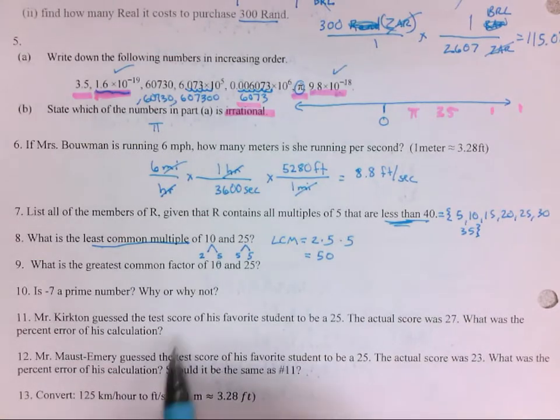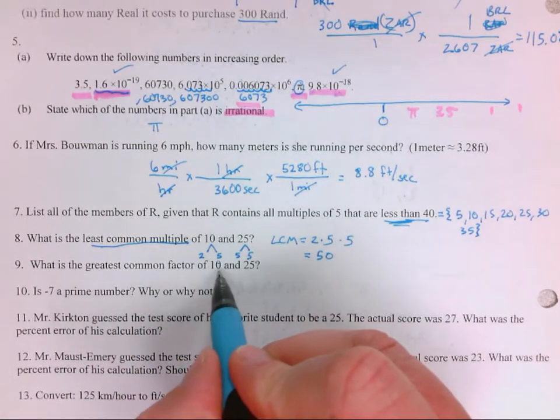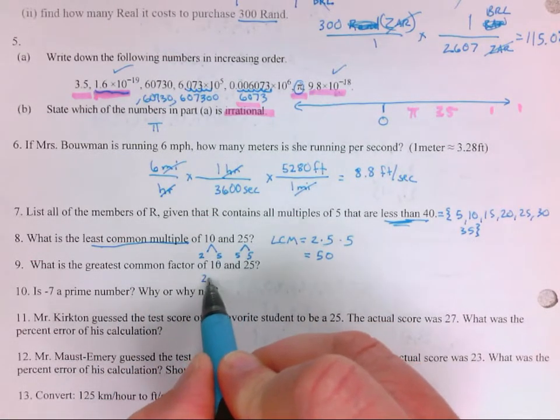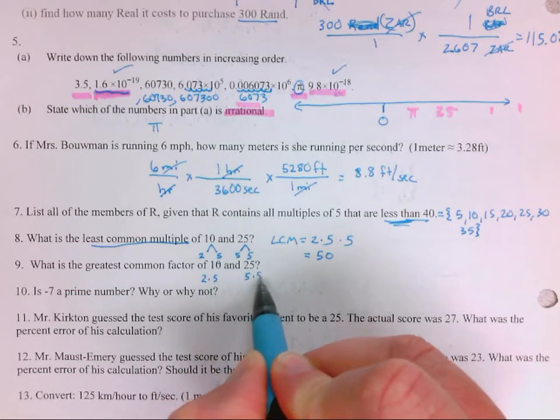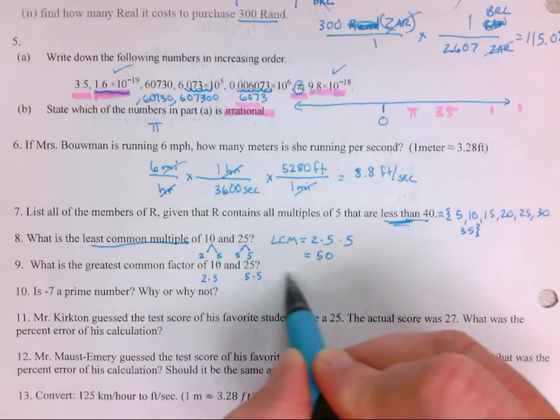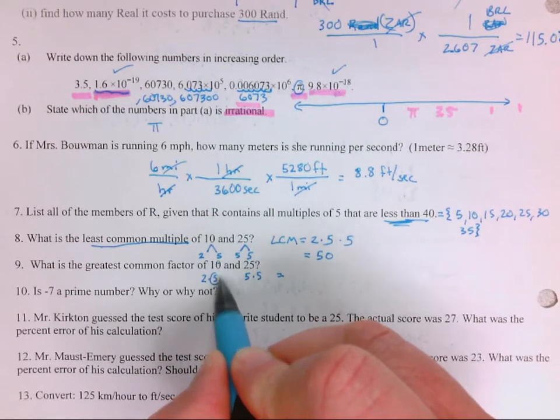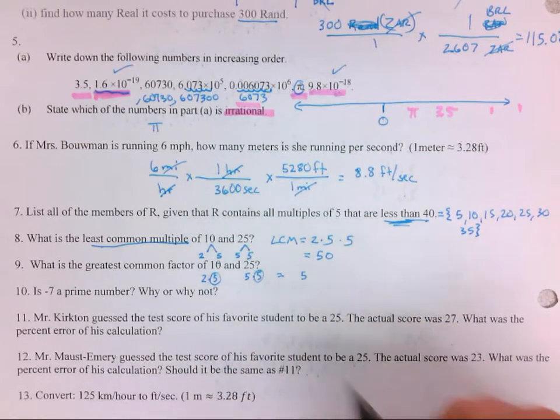What is the greatest common factor? Again, you can use your 2 times 5 and your 5 times 5, and then find the biggest number that goes into both. There's a 5 that goes into both.